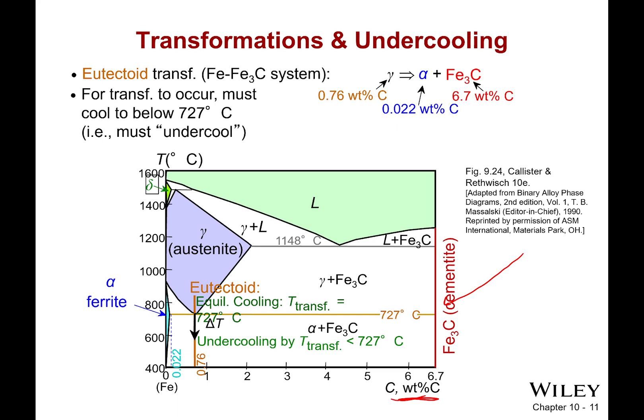I also have a eutectoid transition over here, where I go from one solid to two different solids. If I want to have that eutectoid transition happen, I have to go below 727 degrees Celsius.